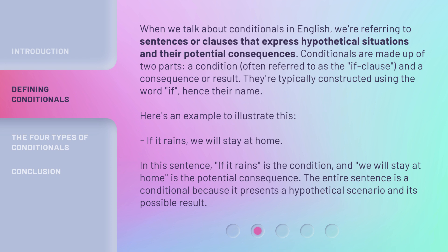If it rains, we will stay at home. In this sentence, "if it rains" is the condition, and "we will stay at home" is the potential consequence. The entire sentence is a conditional because it presents a hypothetical scenario and its possible result.